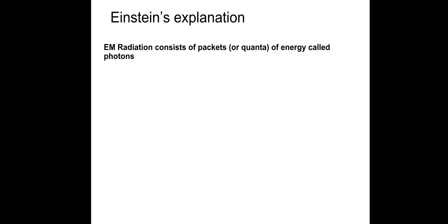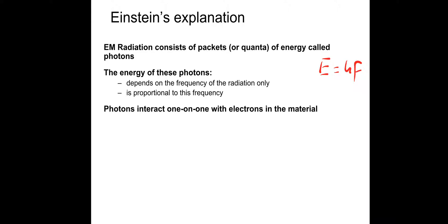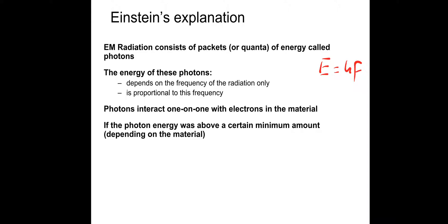Einstein had an explanation. He said that EM radiation consists of packets or quanta of energy, and he called them photons. The energy of these photons depends on the frequency of the radiation only: E equals HF, which is proportional to the frequency. Photons interact one on one with electrons in the material. If the photon energy was above a certain minimum amount depending on the material, then electrons would indeed be emitted, and the excess energy is available for the kinetic energy of the emitted electrons.